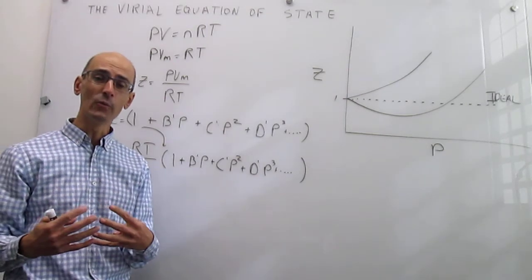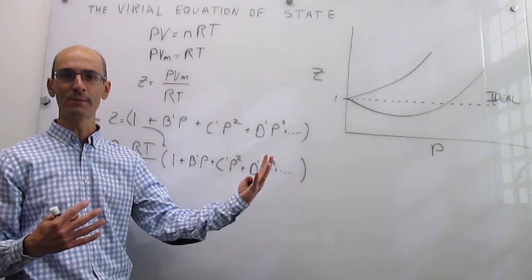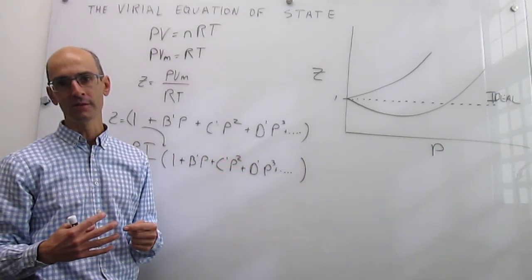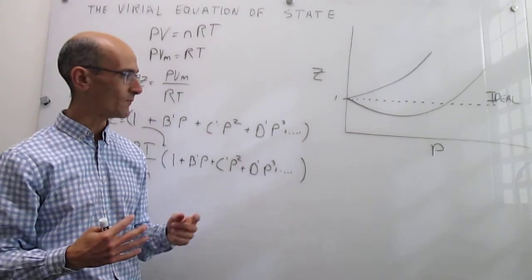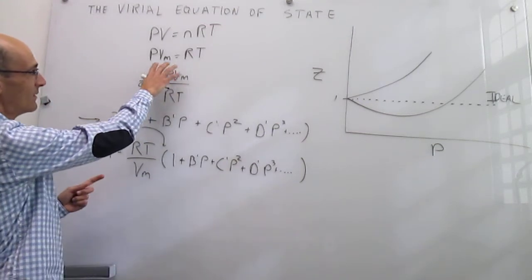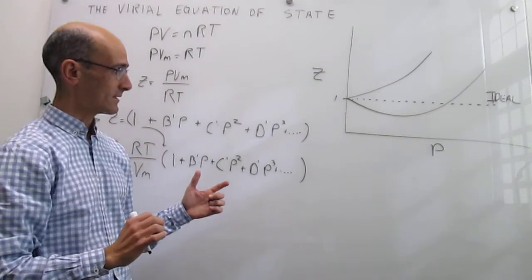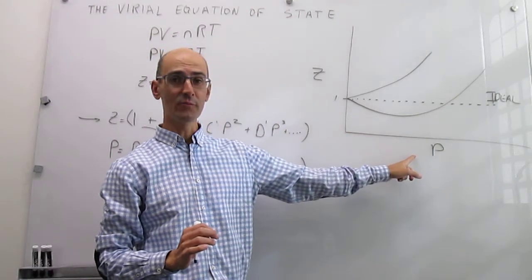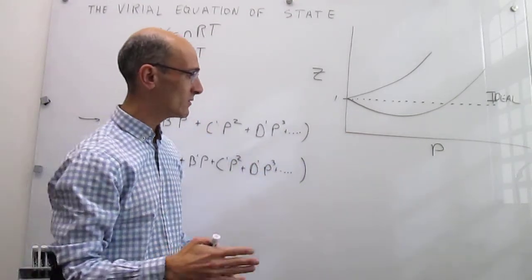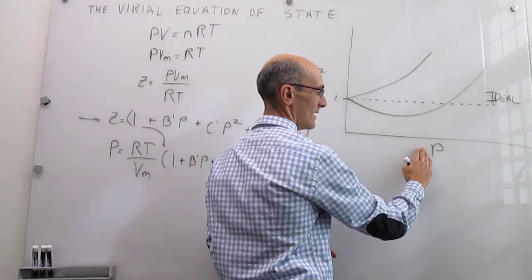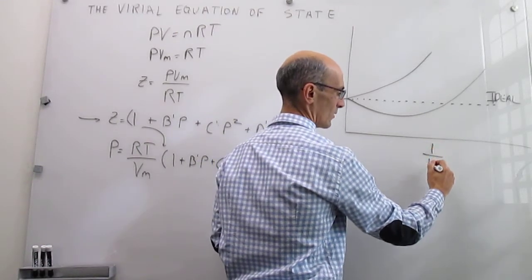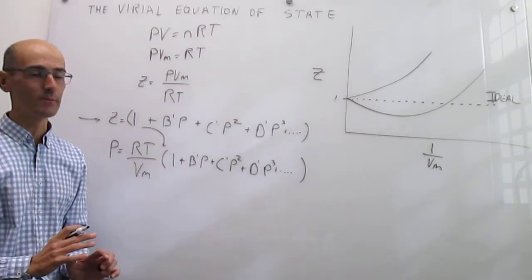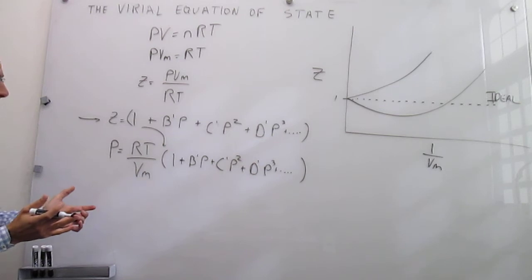Now, occasionally, we actually express this virial expansion, this virial equation of state, not as a function of the pressure, but as a function of the inverse of the molar volume. Notice that pressure and molar volume are inversely related. So here we have chosen to plot this compression factor as a function of pressure, but we could also have chosen to plot this as a function of the inverse of the molar volume.